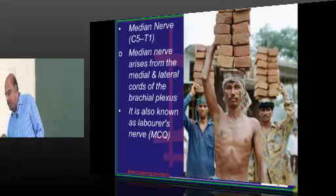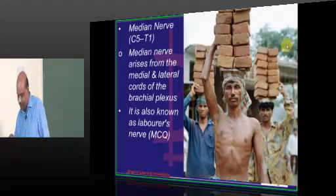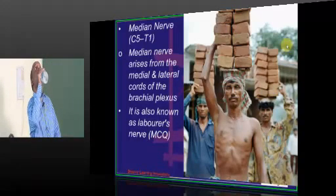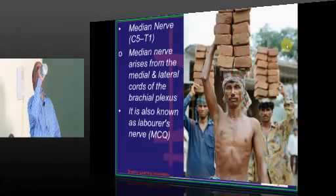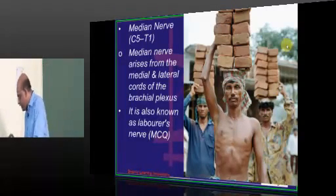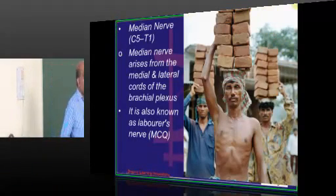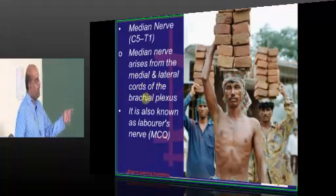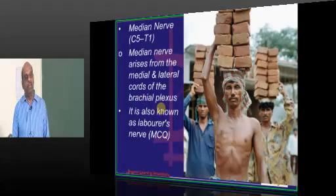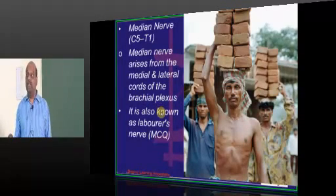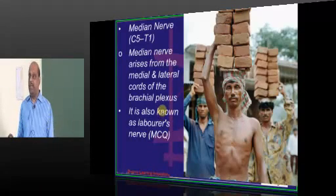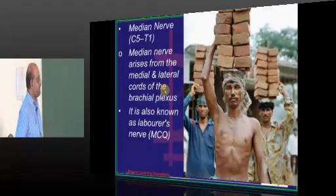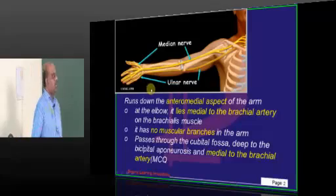What is the root value is the challenge doctor? C5 to T1. It is the medial and lateral cords of the brachial plexus from which the median nerve arises. Once more brachial plexus there is a pain. What are the branches of the posterior cord, medial cord, lateral cord etc. We will take up that is also a high yield topic, brachial plexus.